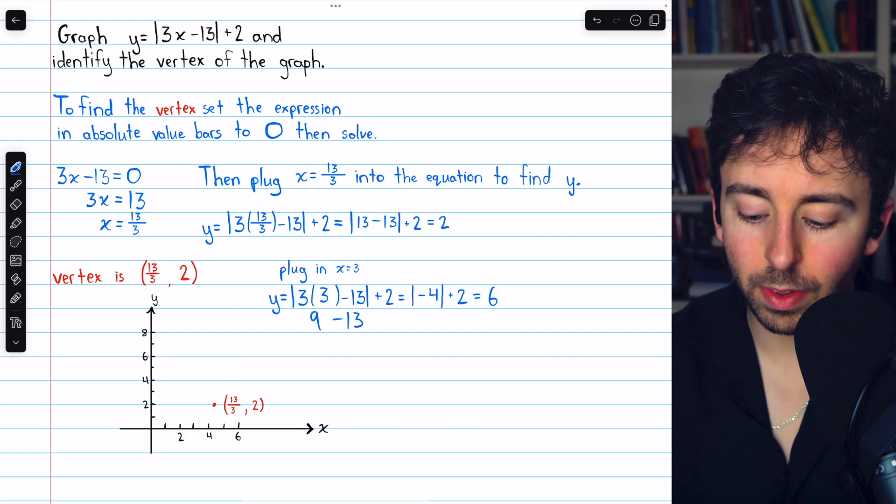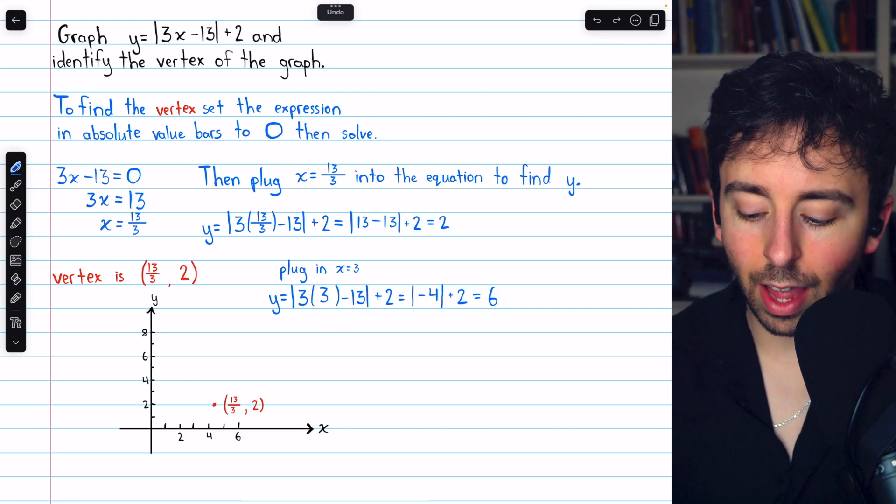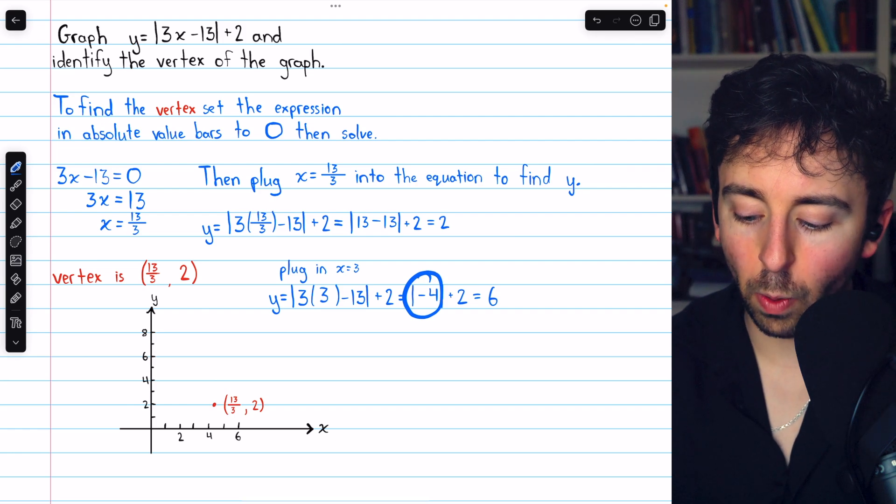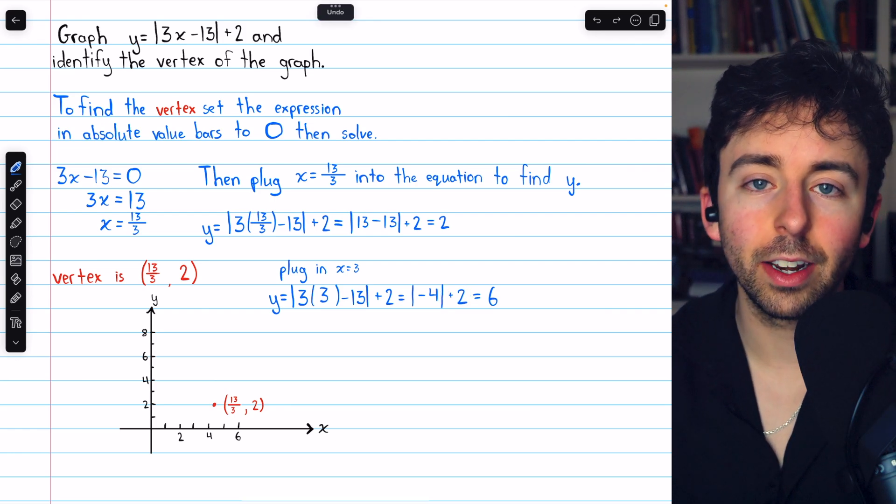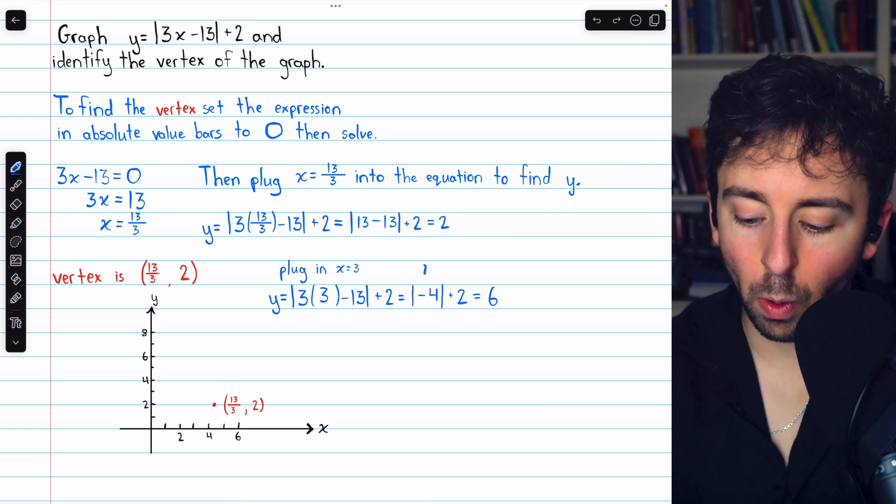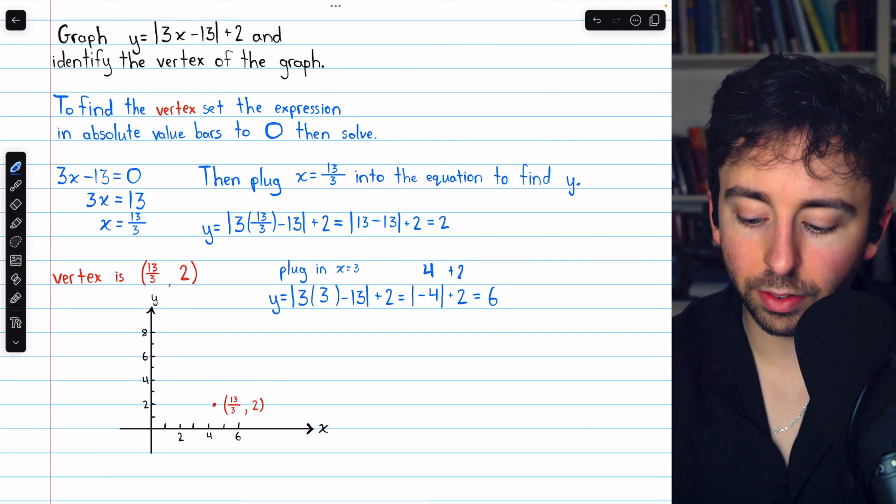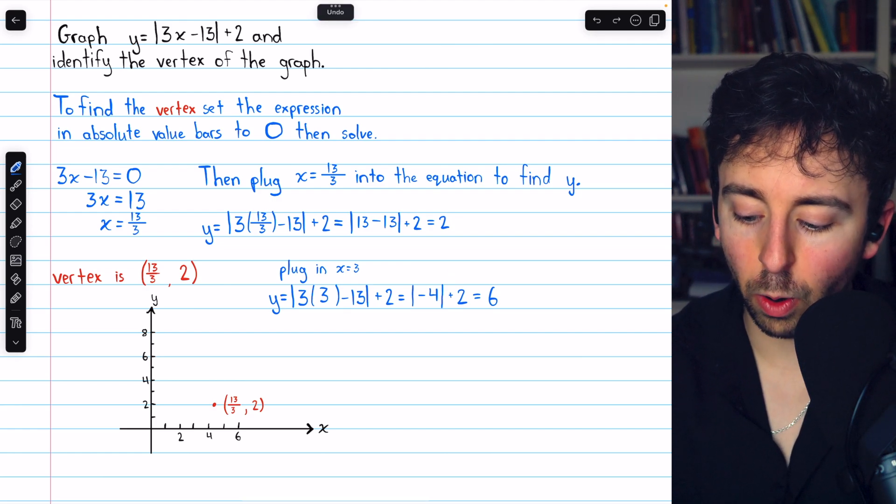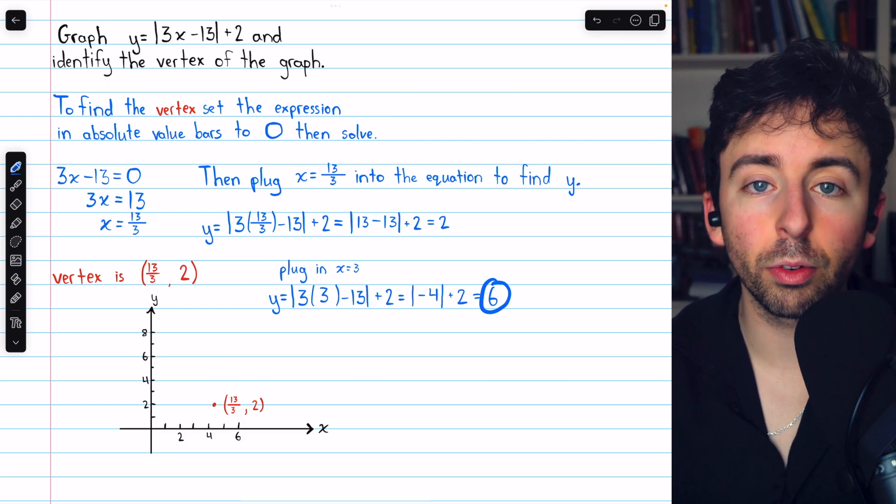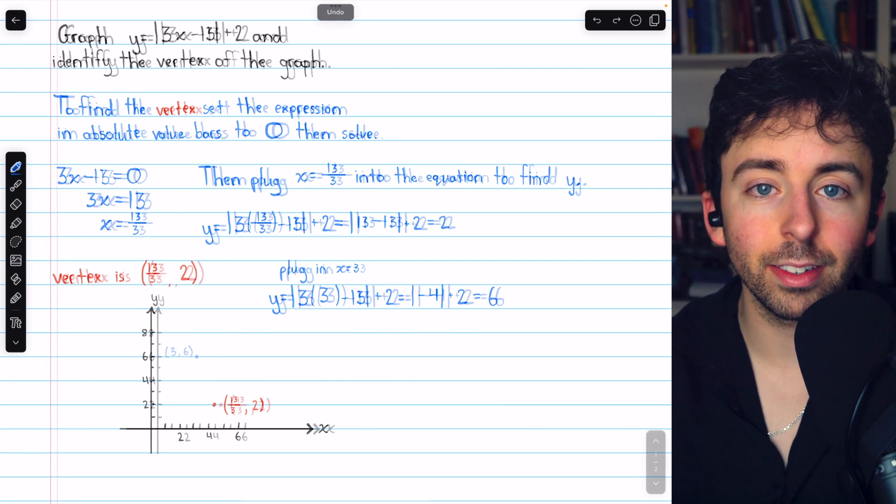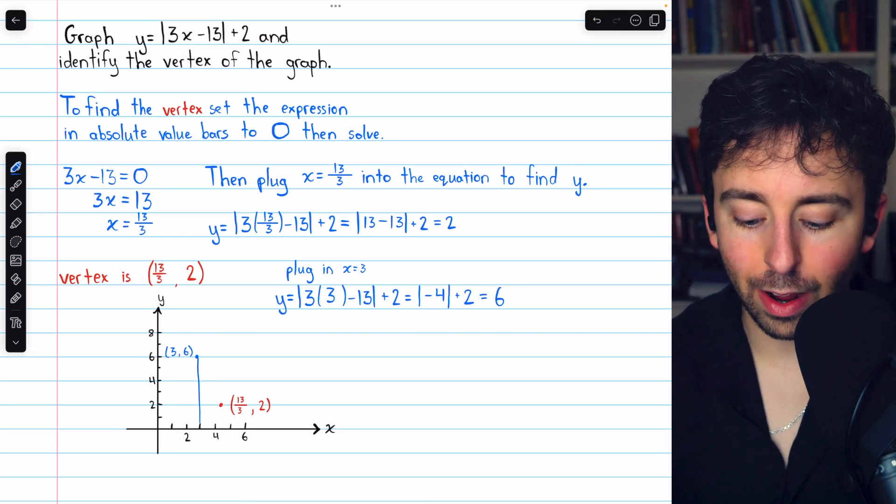3 times 3 is 9, minus 13 is negative 4. So inside the absolute value bars, we have negative 4, and there's a plus 2 outside. The absolute value of negative 4 is just positive 4. And positive 4 plus 2 gives us our y-coordinate of 6. So at x = 3, y is equal to 6. And there that is on our graph.